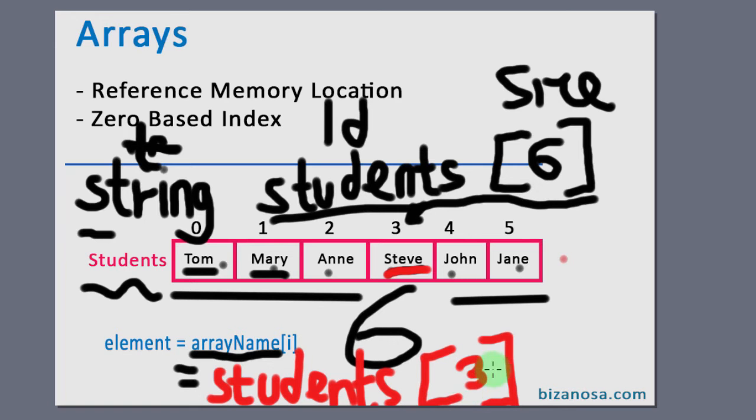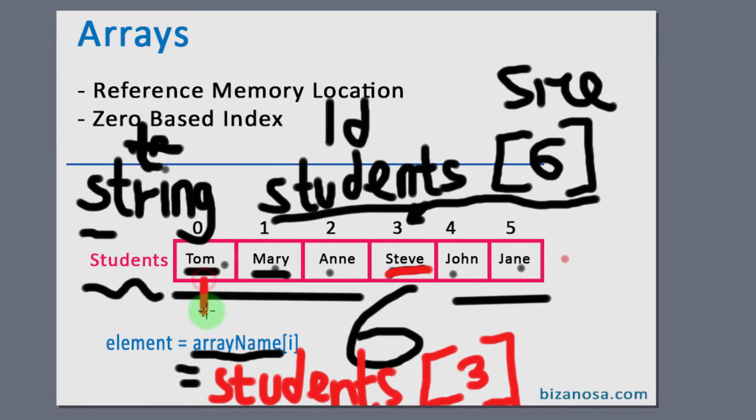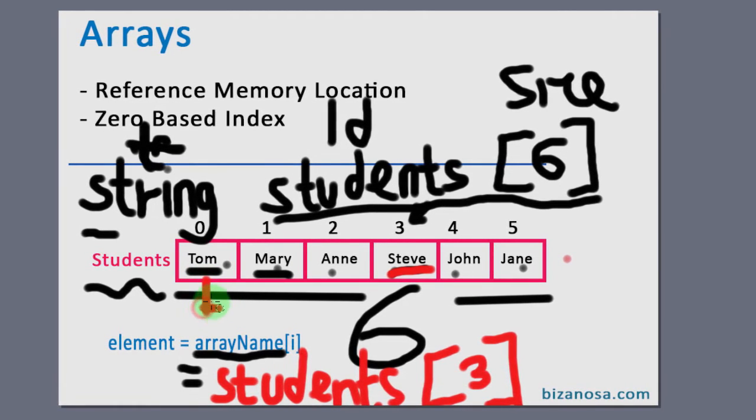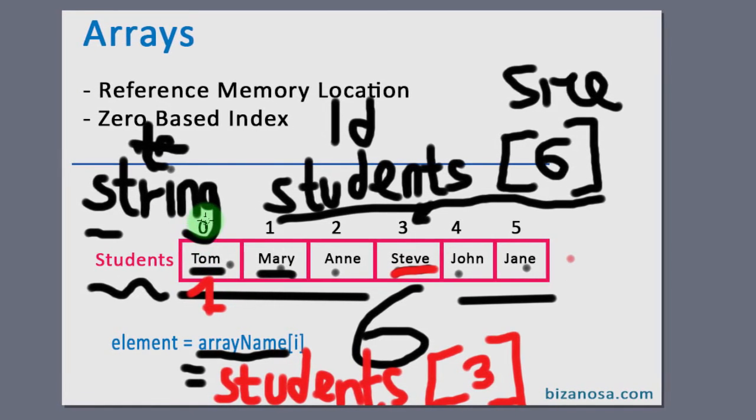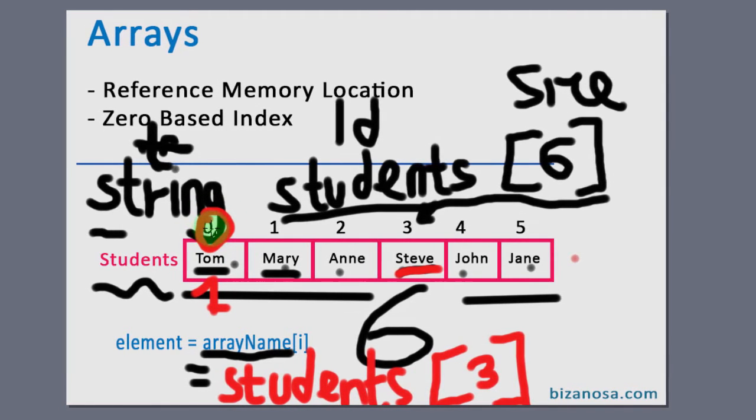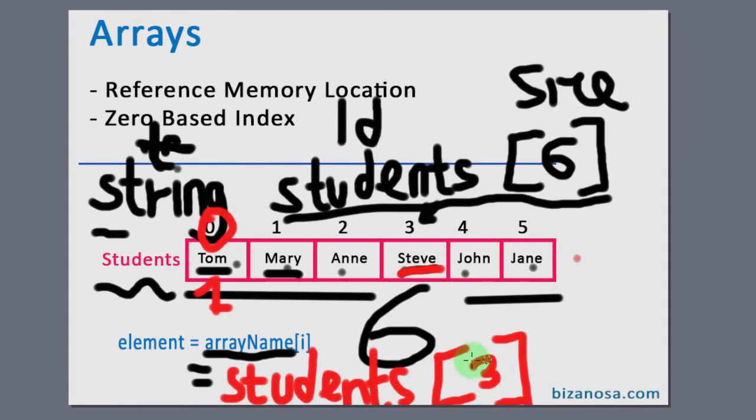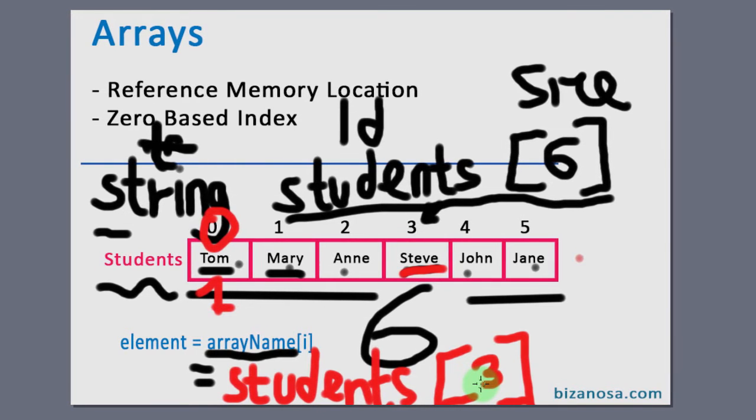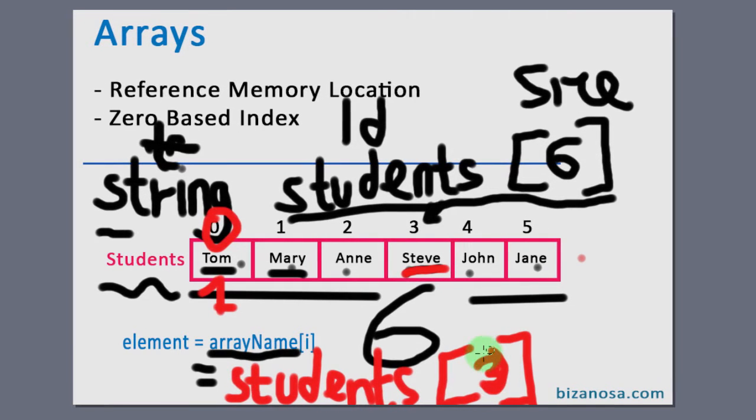Now this will give you this. If you want to access the first element here, although it is at number one, we know arrays are zero based. So you'll start from zero. The first element is at zero.